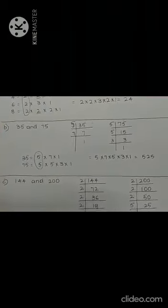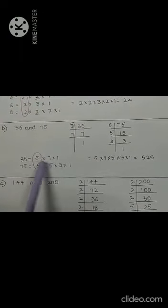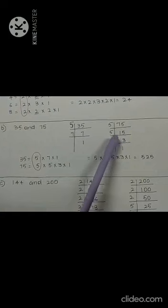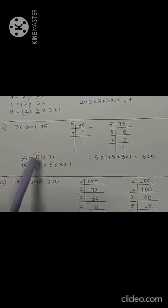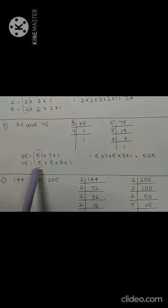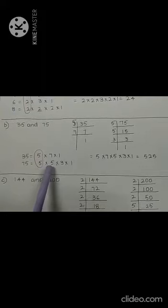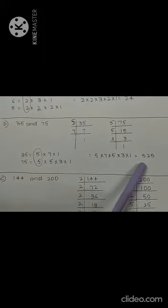The second problem: find the LCM of 35 and 75. First step — do the prime factorization. I have done the factorization of 35 and written the factors. Then I have done the prime factorization of 75 and written the factors. Next, observe which factors are common in both numbers. 5 is common, so I have written 5 only once. Then multiply the remaining factors: × 7, × 5, × 3. I got the LCM.